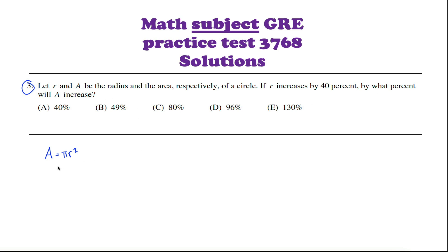I think the most straightforward way to do this is think about A and R as representing the original radius and area. So then maybe the new area A1 would be equal to pi times the new radius squared.